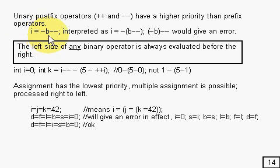If you look at i equals minus b minus minus, then how that's interpreted is that the minus minus is applied first, and then the net minus in front. And if you try and interpret it any other way, for example like that, then you get an error because minus b is a value, and you can't apply that decrement operator to a value, it has to be a variable.